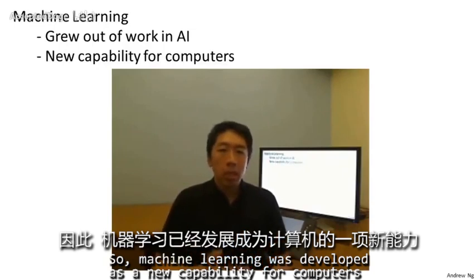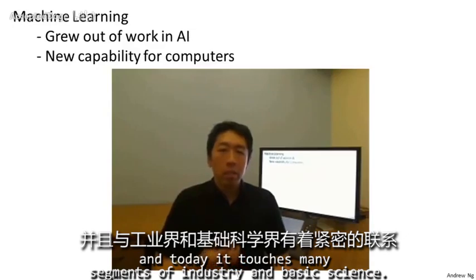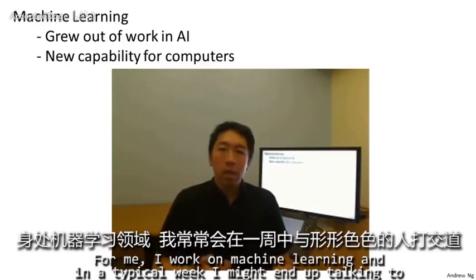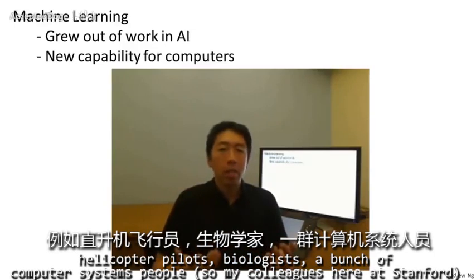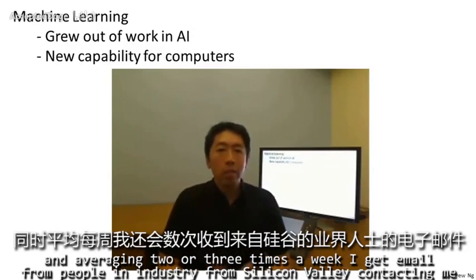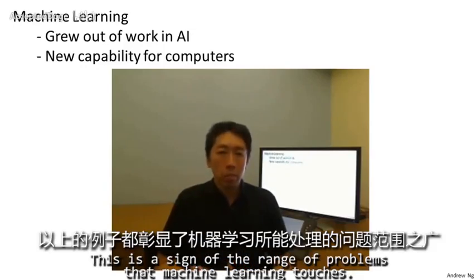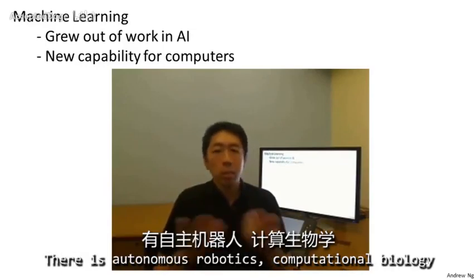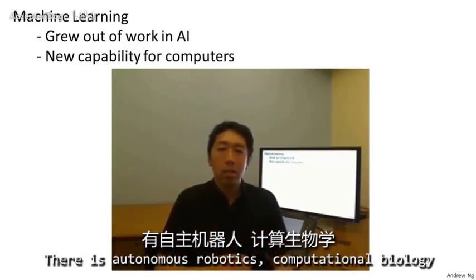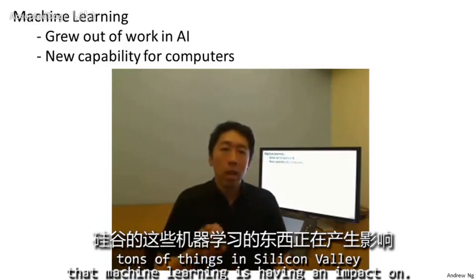Machine learning was developed as a new capability for computers, and today it touches many segments of industry and basic science. I work on machine learning, and in a typical week I might end up talking to helicopter pilots, biologists, computer systems people, and some of my colleagues here at Stanford. Averaging two or three times a week, I'll get email from people in industry from Silicon Valley who have an interest in applying learning algorithms to their own problems. This is a sign of the range of problems that machine learning touches — there's autonomous robotics, computational biology, and tons of things in Silicon Valley where machine learning is having an impact.